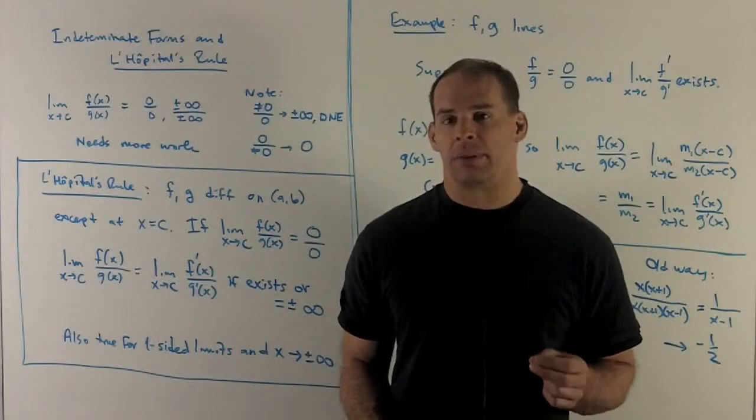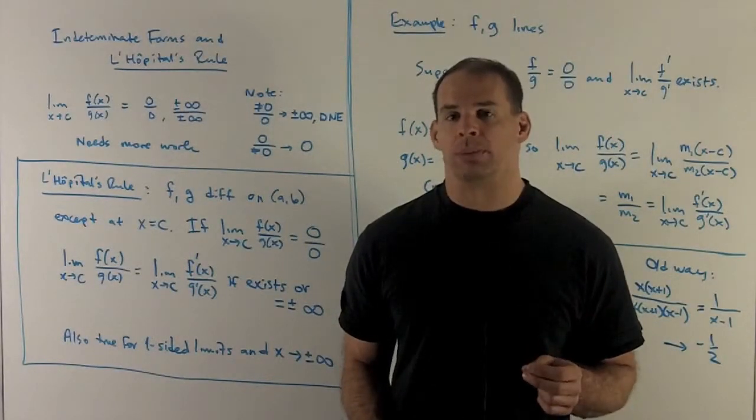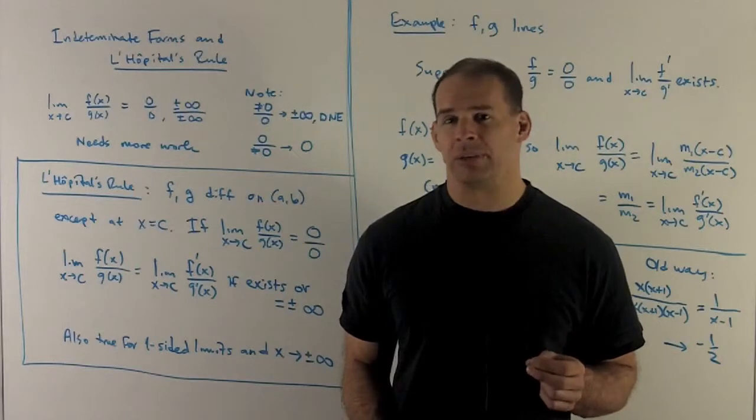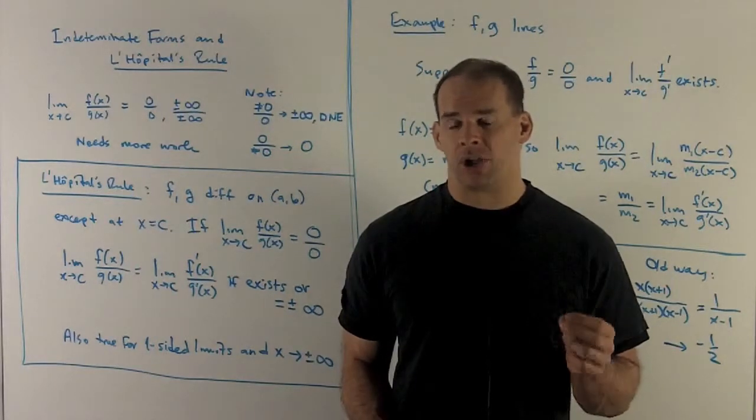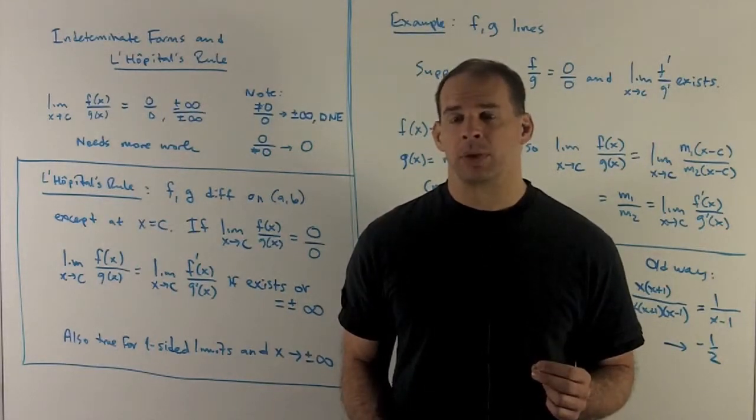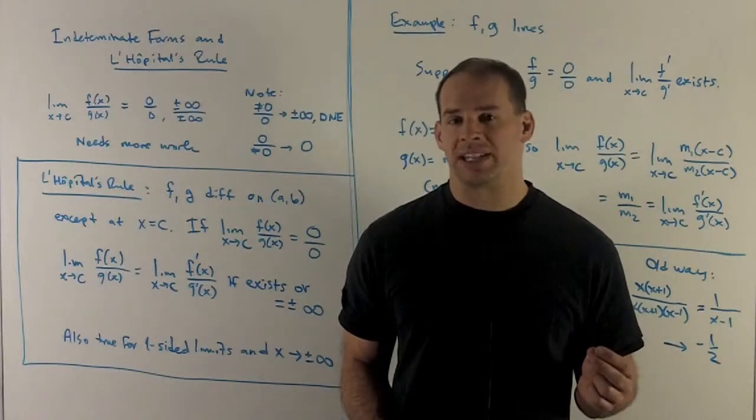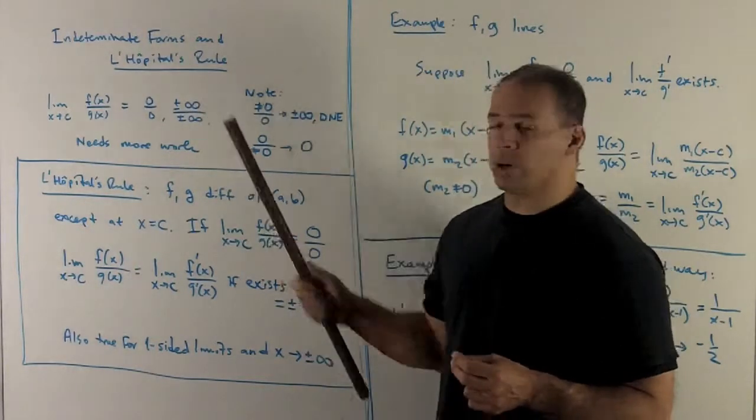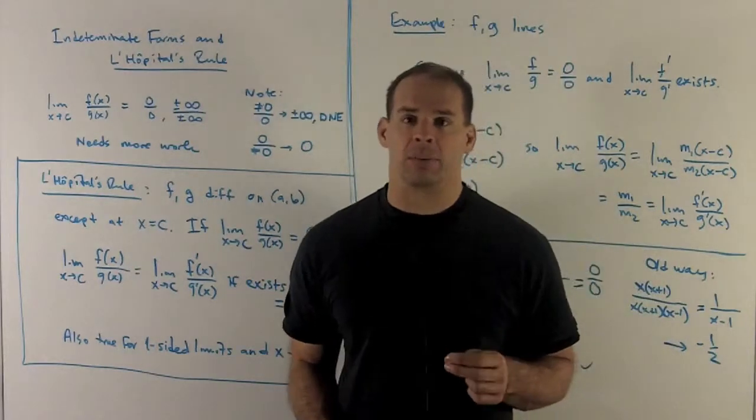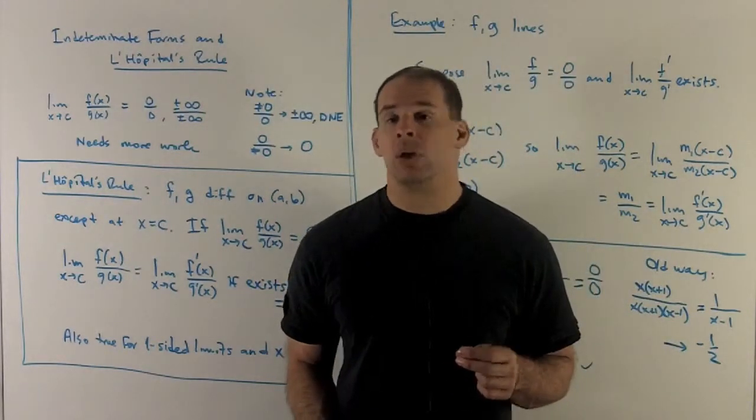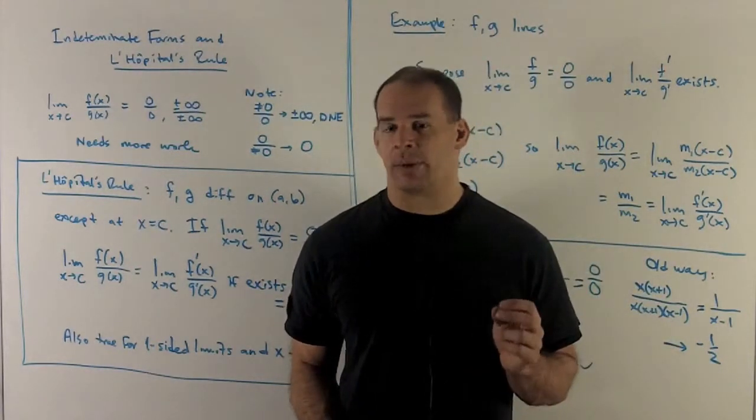Now let's take a look at indeterminate forms and L'Hopital's rule. In this situation, we take a limit of a function over another function. We stick our limiting point in at c. What comes out is 0 over 0 or plus minus infinity over plus minus infinity.